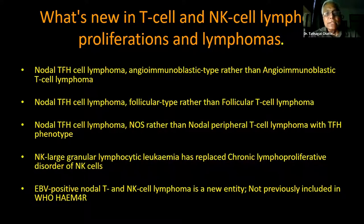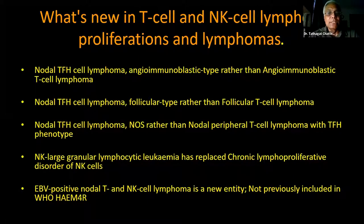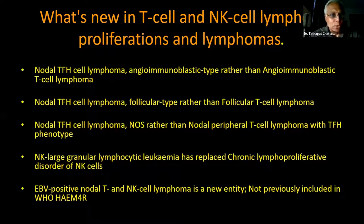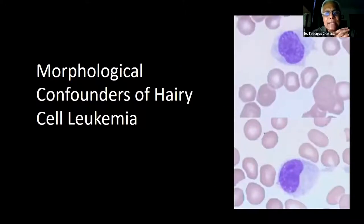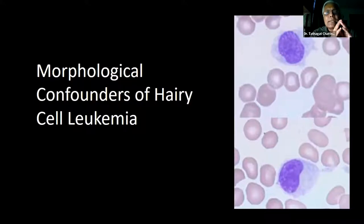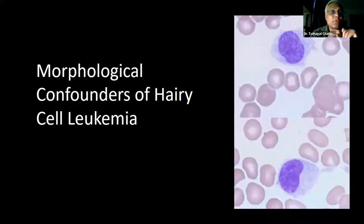The NK large granular lymphocytic leukemia has replaced the chronic lymphoproliferative disorders of NK cells from the 2016 edition. The Epstein-Barr positive nodal T and NK cell lymphoma is a new entity, never included in the previous WHO 4th revised edition. I have focused on entities relevant to the topic of CLPD. Keeping hairy cell leukemia as the index, I will discuss some morphological confounders using a case-based approach, showing how to differentiate between various CLPDs.